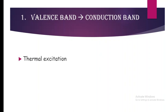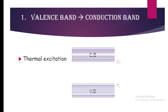Here thermal excitation takes place. Considering the conduction band with energy EC and valence band with energy EV, there are a number of electrons in the valence band. At absolute zero the conduction band is completely empty whereas the valence band is completely filled by electrons.